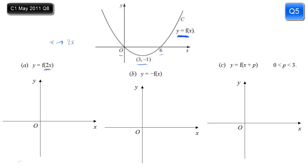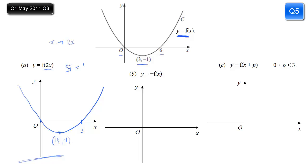There are no scales on the axes, so when it's a stretch I can draw the same curve but with a different scale. Rather than passing through at 6, 0 it's going to pass through at 3, 0. The minimum point, rather than being (3, −1), is going to be (1.5, −1) or (3 over 2, −1). The scale factor is a half because it's the reciprocal of the number in front of x.